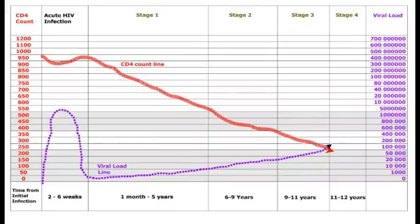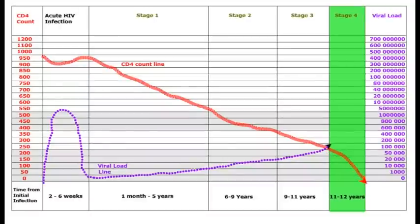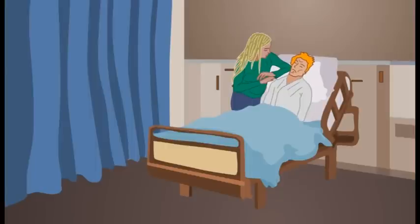Within about 11 or 12 years of HIV infection without medical treatment, a person enters stage 4. Another name for stage 4 is AIDS. The CD4 count drops below 200 and the body begins to lose its long battle against HIV. Viral levels are high in the blood. Severe life-threatening infections occur in this stage.